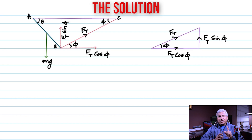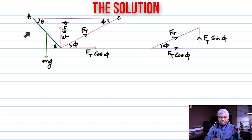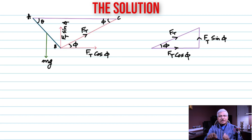Now let's look at the torques acting. There are three torques. Torque is the product of force and the perpendicular distance between the line of action of the force and the point. We're calculating torque about the hinge point A. For FT cosine phi, the line of action runs horizontally, and the perpendicular distance from A to that line of action is measured accordingly. Similarly for FT sine phi, its line of action and corresponding perpendicular distance are identified.